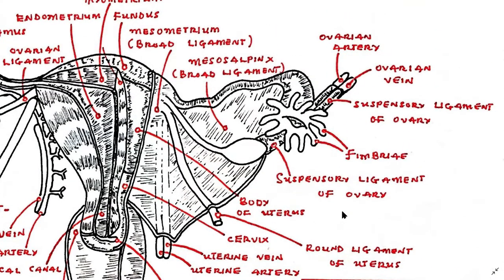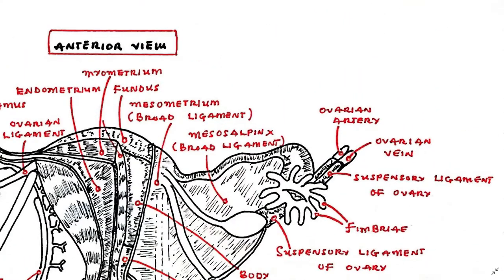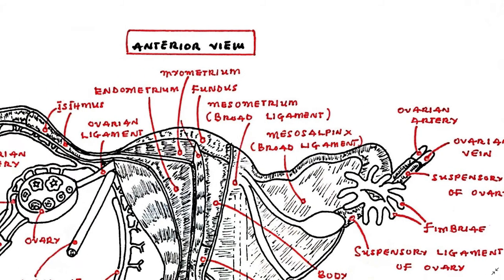The wall of the uterus is largely smooth muscle, or myometrium. It is lined with a glandular surface layer of variable thickness known as the endometrium, which is extremely sensitive to hormones such as estrogen and progesterone.